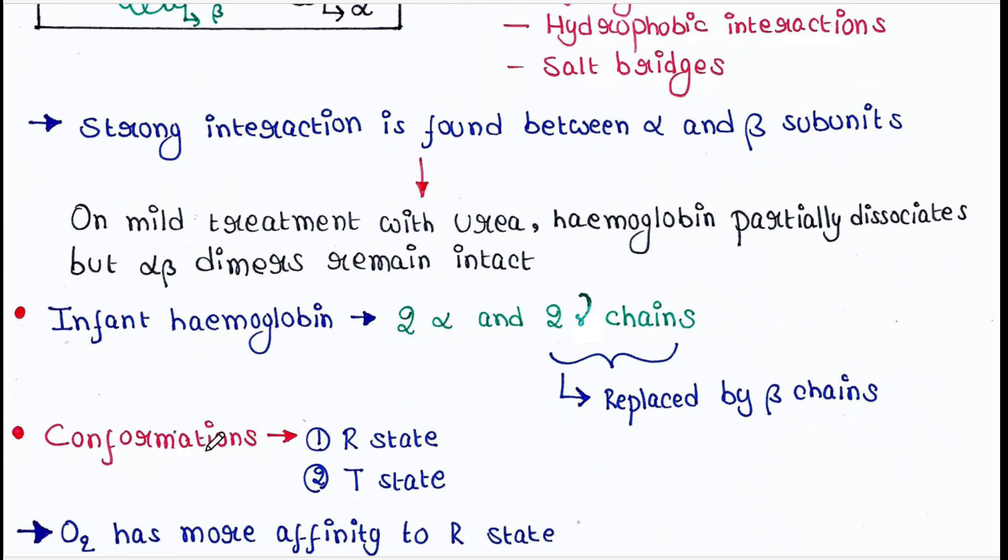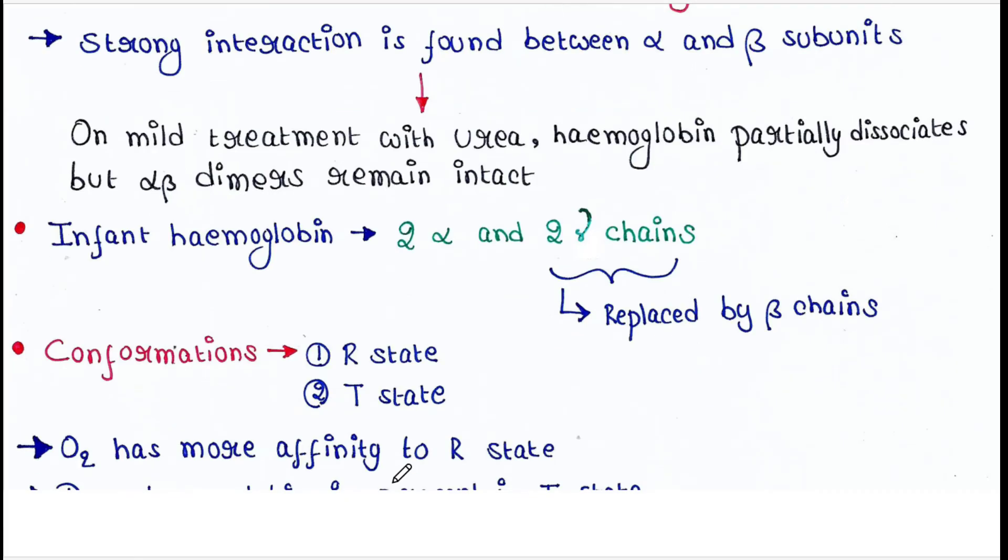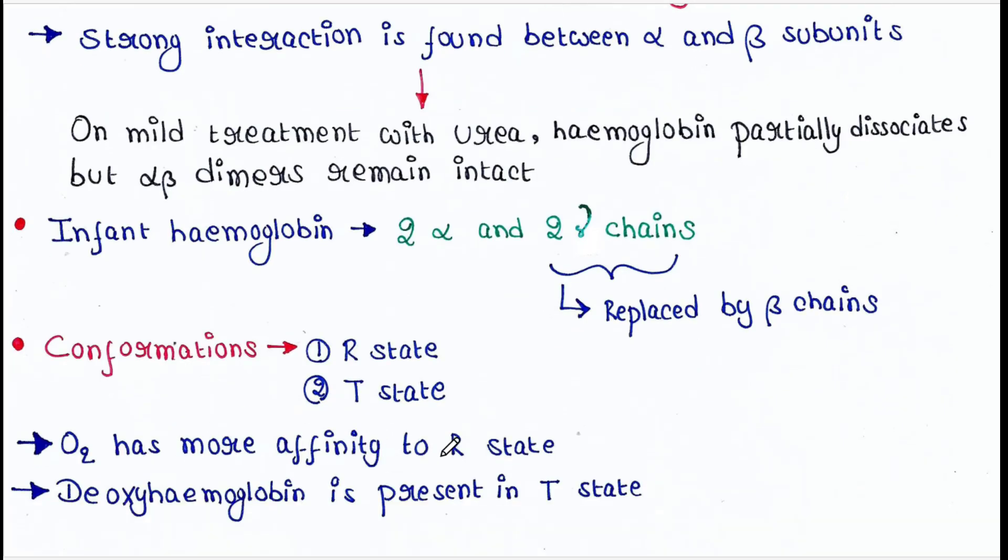Conformations of hemoglobin. So it has two states: R state and T state. Oxygen has more affinity to R state. Deoxyhemoglobin is present in T state.